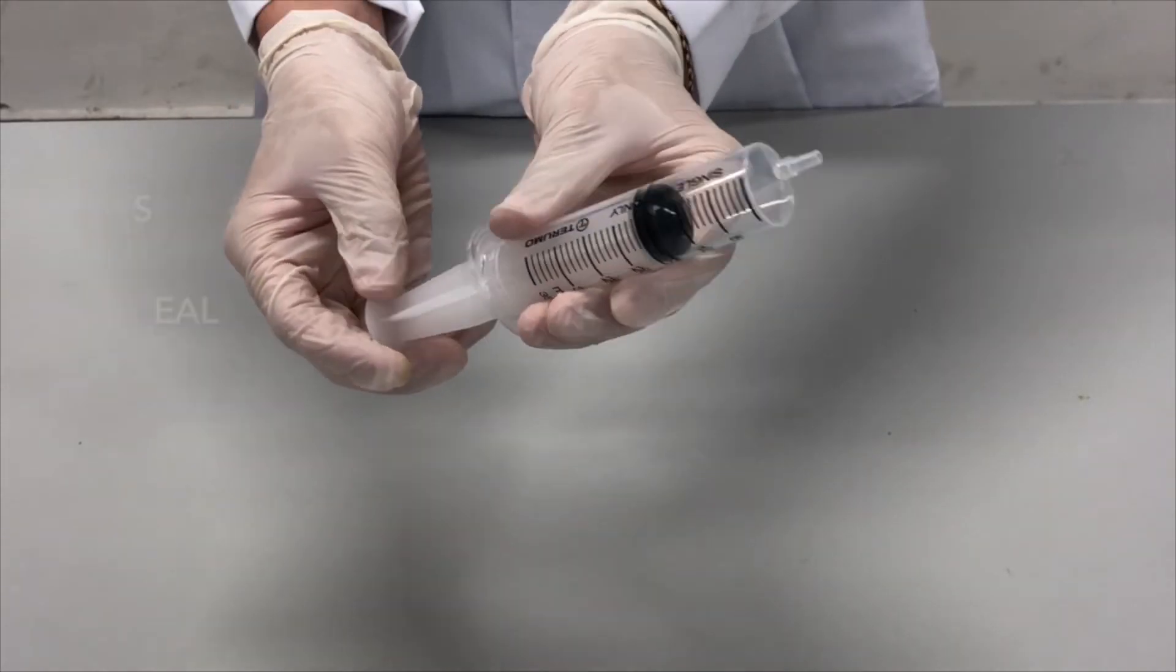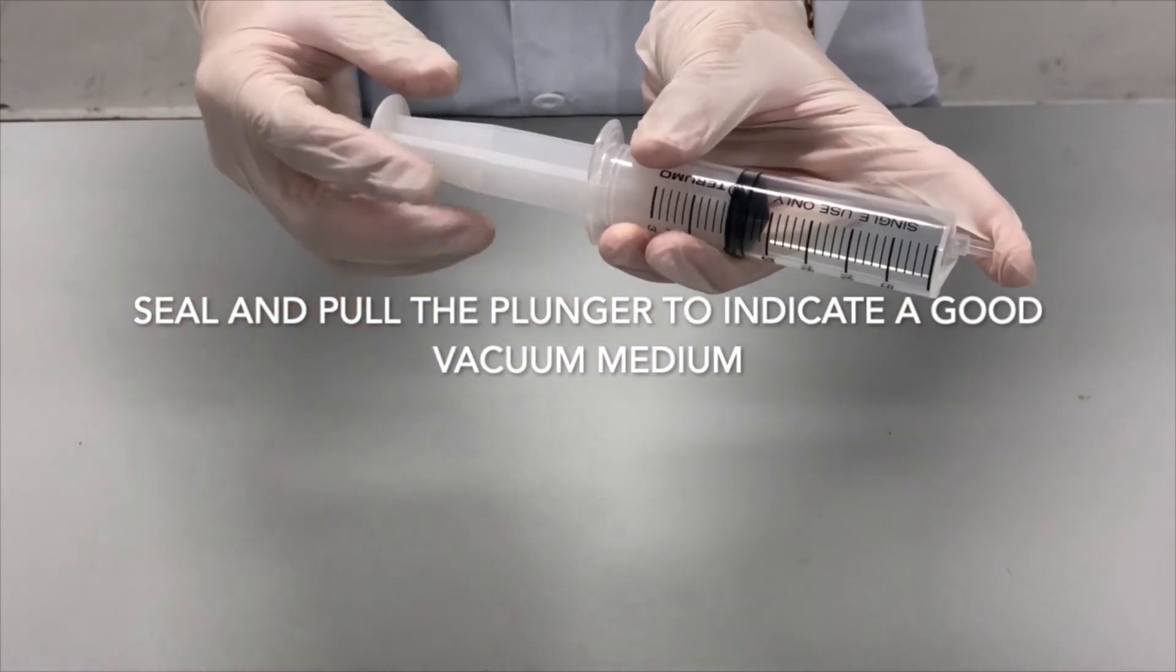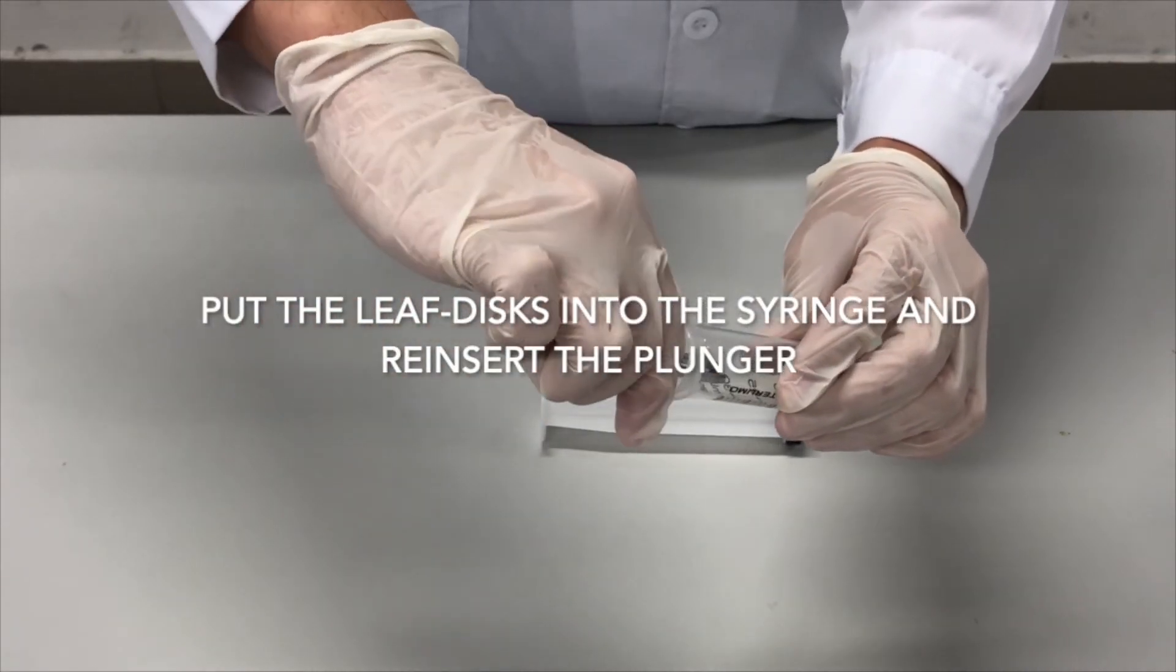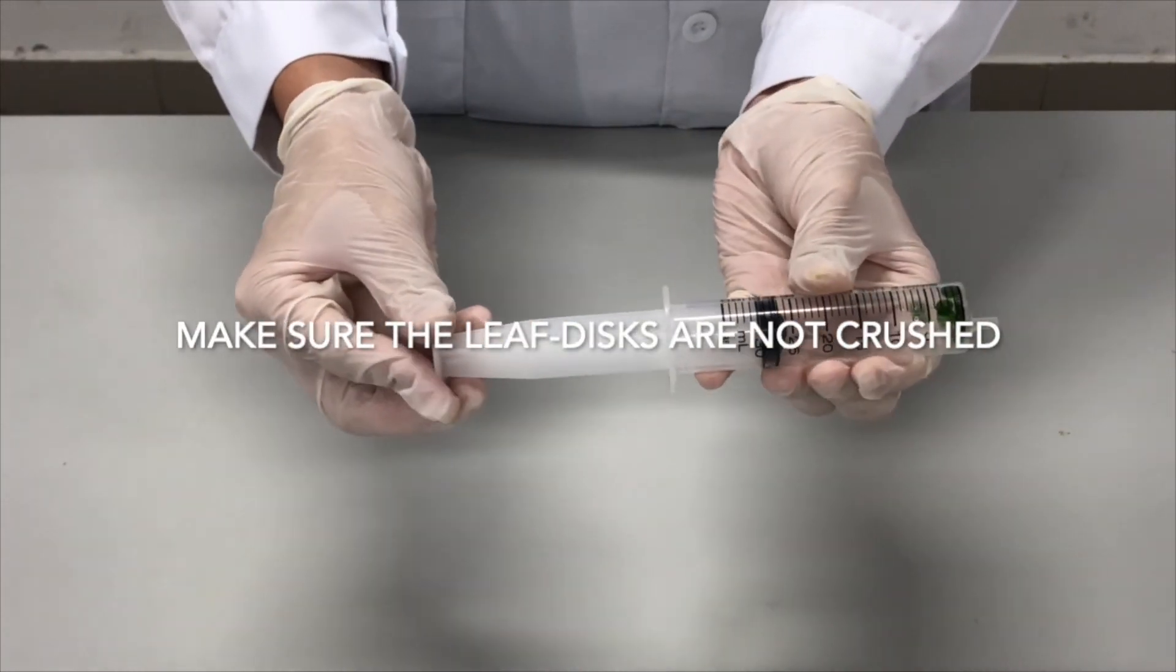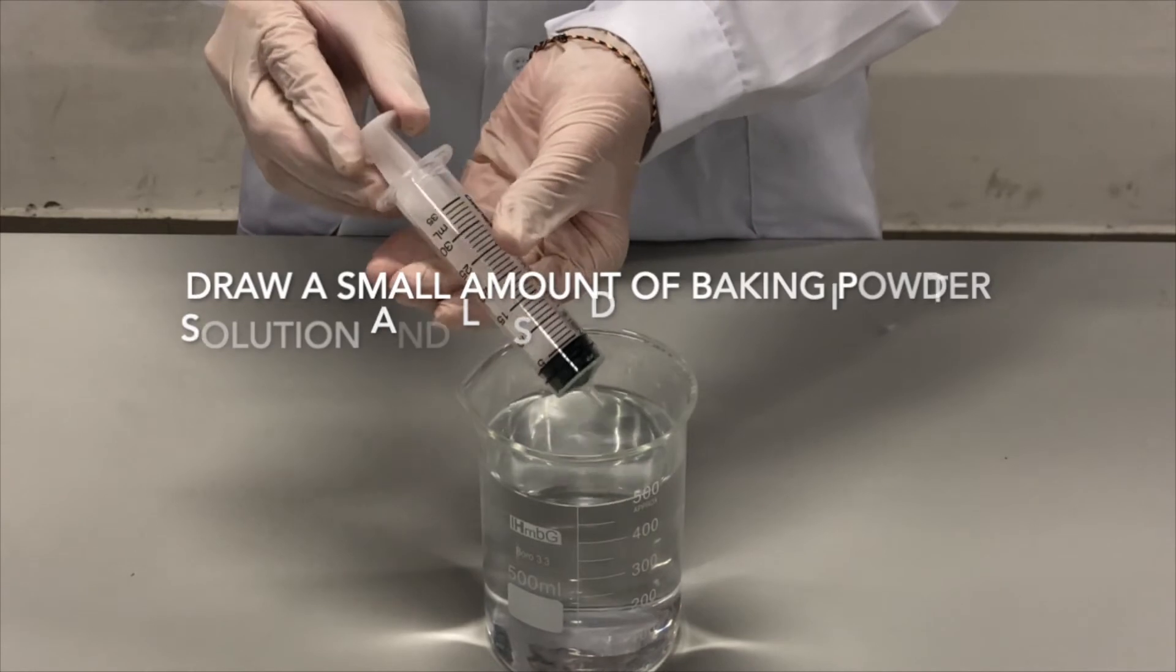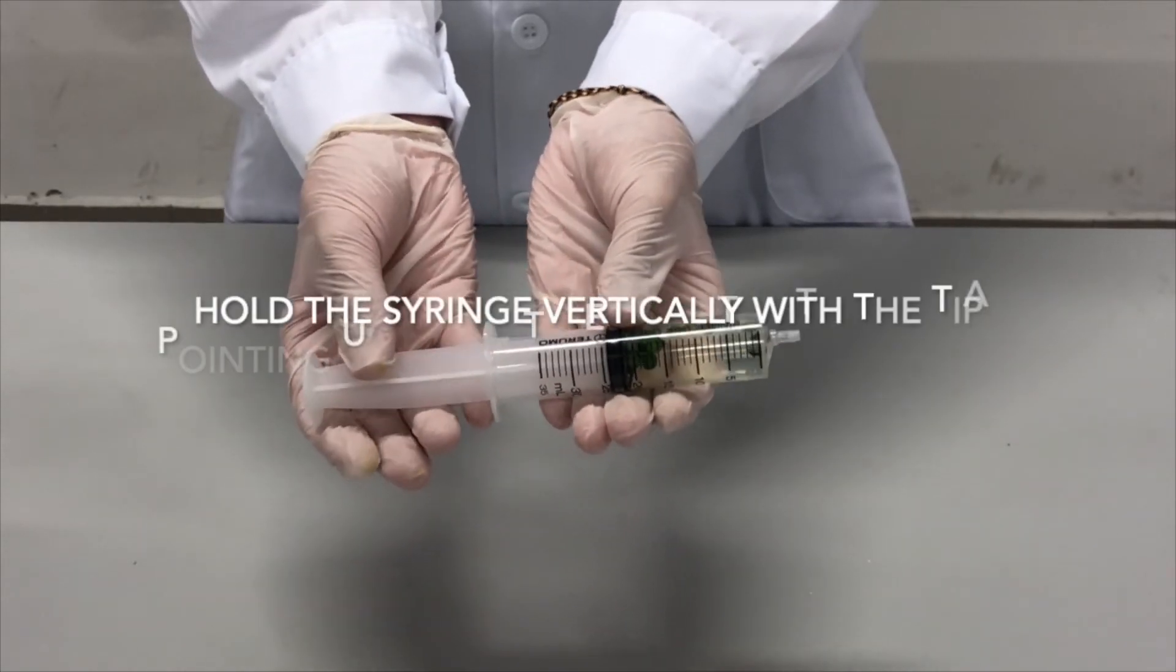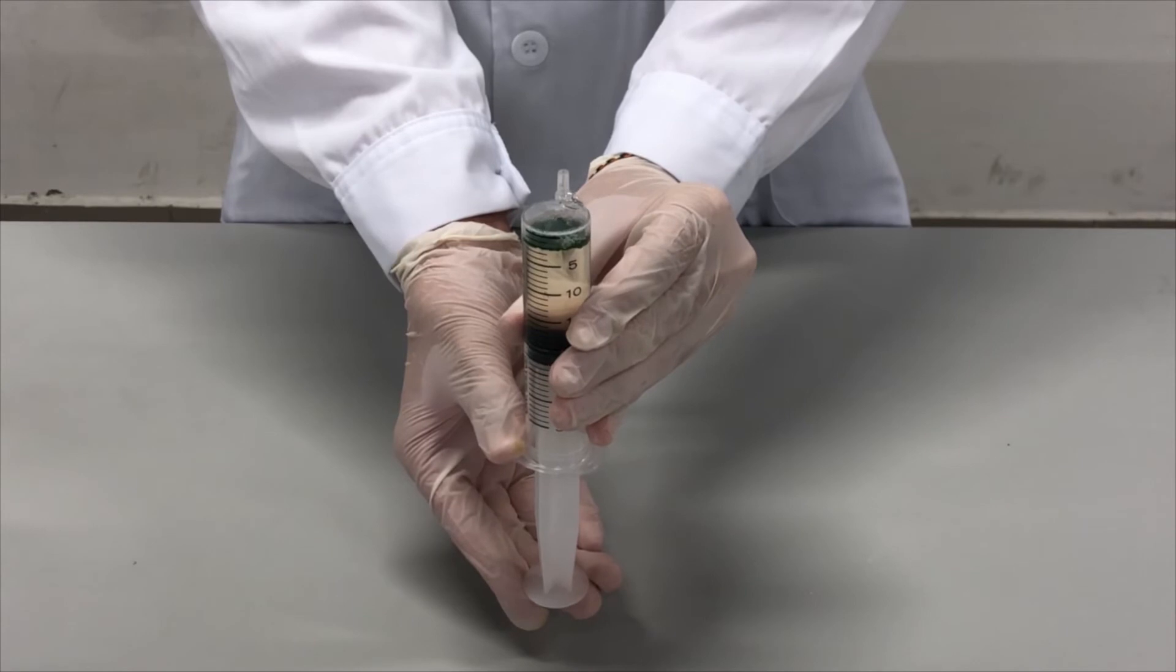Test the syringe by sealing the tip and pulling back on the plunger. Why? This is to indicate a good vacuum medium. Put the leaf disk into the syringe and reinsert the plunger of the syringe carefully. Make sure the leaf disks are not crushed. Draw a small amount of baking powder solution and liquid dishwasher into the syringe.